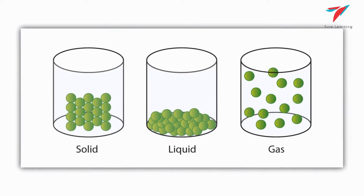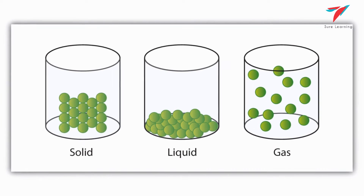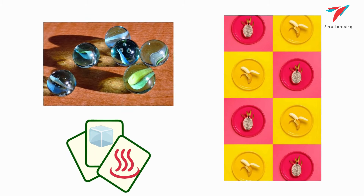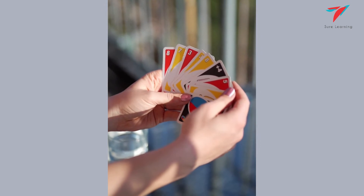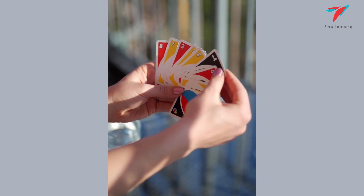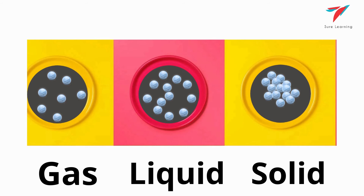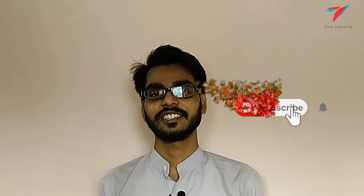Strategy four: the marble game. This activity will help students understand the structure of solids, liquids, and gases. For this game we will need marbles and flash cards with pictures of different objects. Every student will get a card showing either a solid, a liquid, or a gas. Students will have to arrange the marbles on a plate or board as per the picture — if it is a gas, the marbles should be far from each other; if it is a liquid, the marbles will be closer together; and if it is a solid, the marbles will be very close to each other.